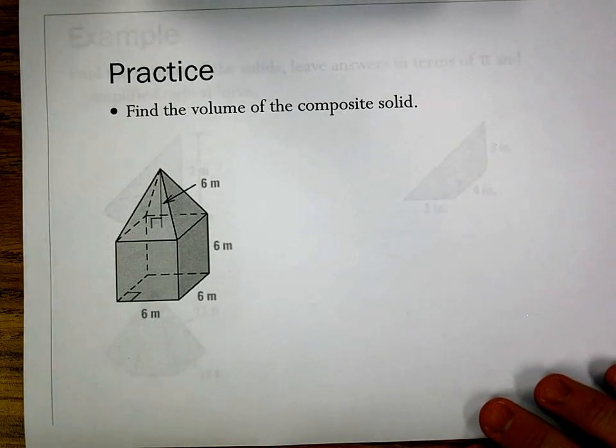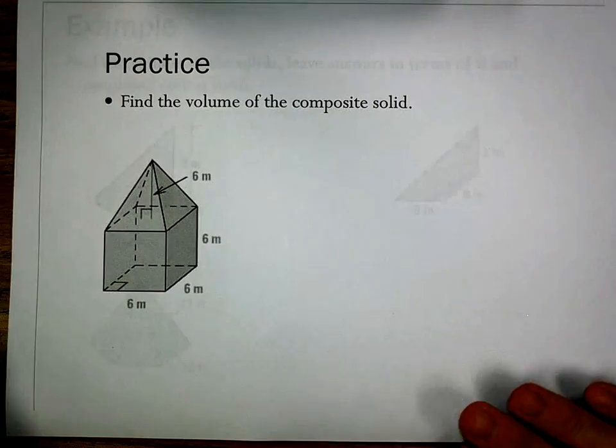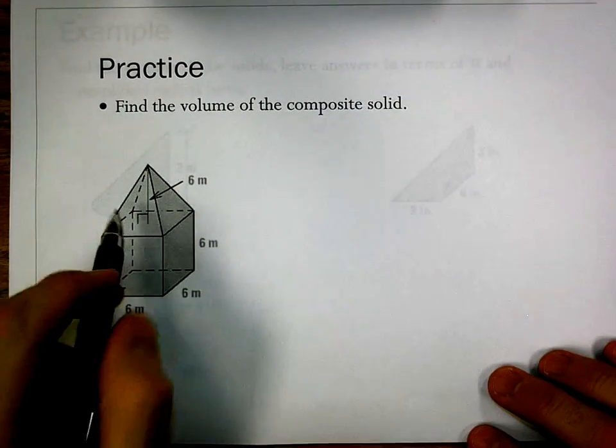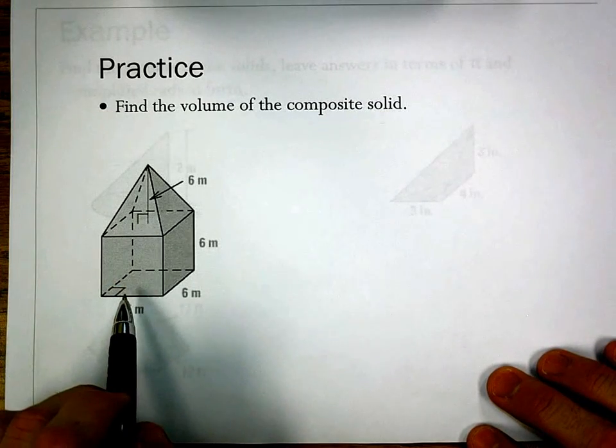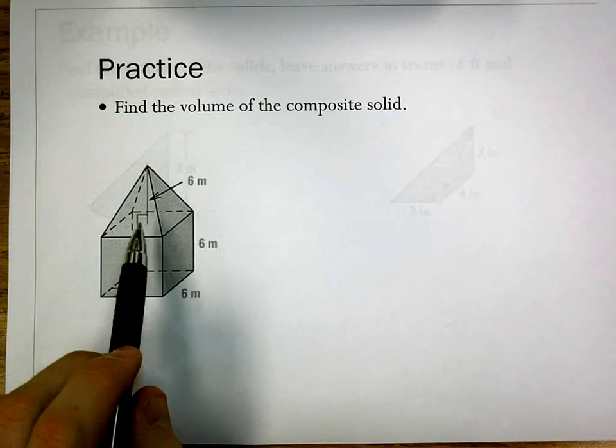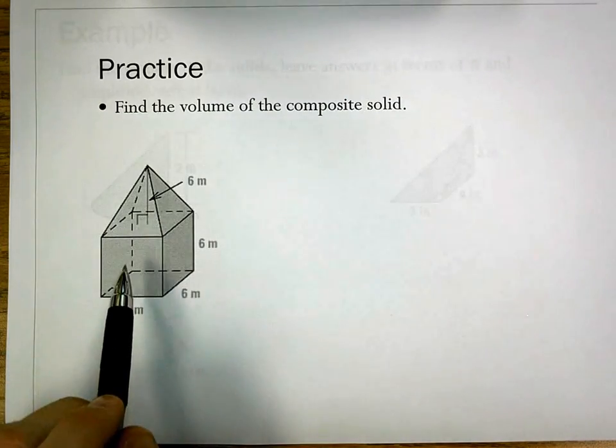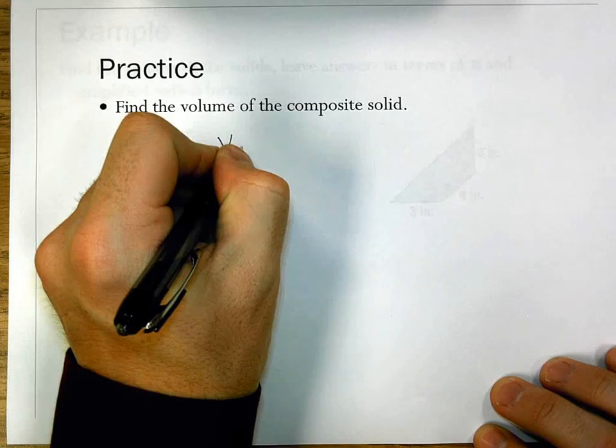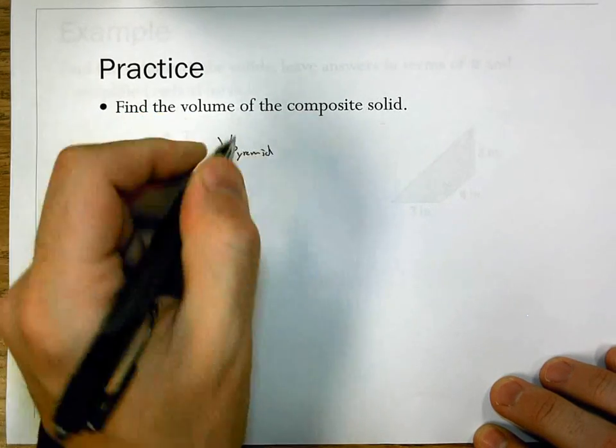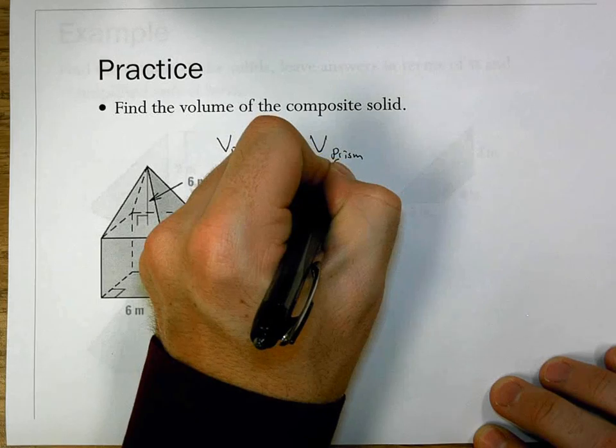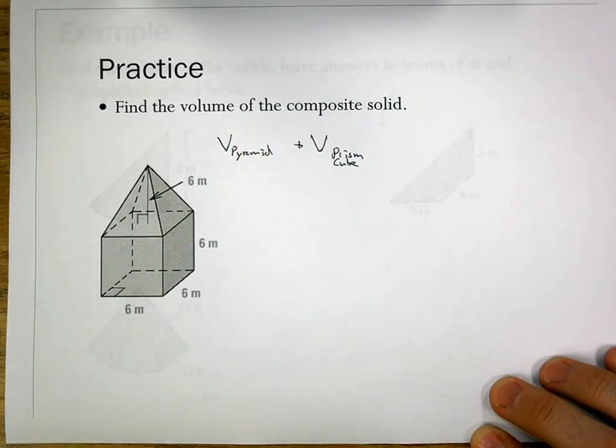Let's look at another example here. Now we're looking at the volume of a composite solid. So now we're combining a couple things together. For this one, I have a pyramid and I have a cube or a square prism. I'm going to combine the volume of this pyramid and the volume of this prism. Volume of the pyramid plus the volume of the prism. It is a cube. It's going to give us our total.